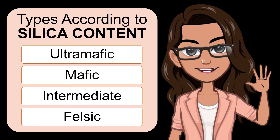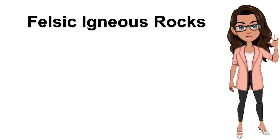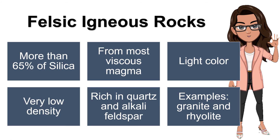The last type according to silica content is felsic. Felsic Igneous Rocks have a very high silica content of more than 65% silica. Before forming into Igneous Rocks, its magma has high viscosity, more viscous than intermediate magma. They have a light color and very low density. They are composed of quartz and alkali feldspar. Examples of these rocks are granite and rhyolite.